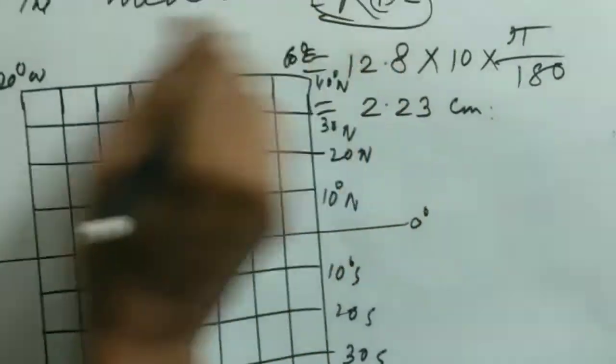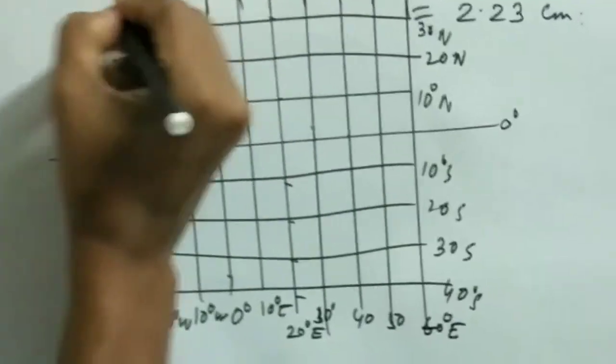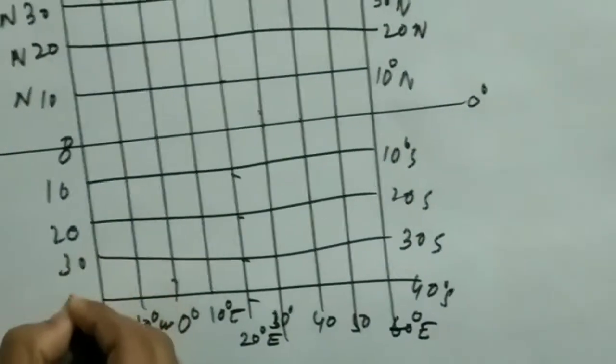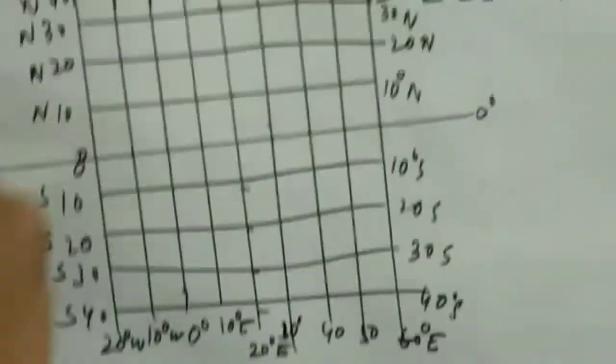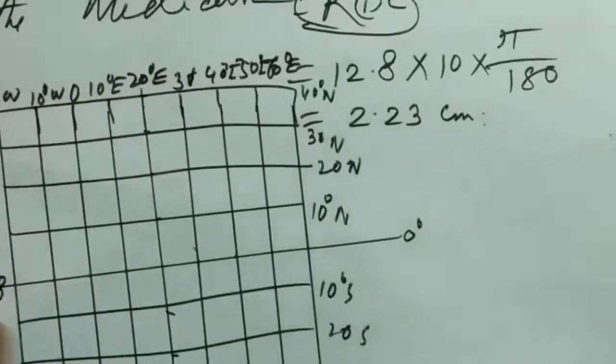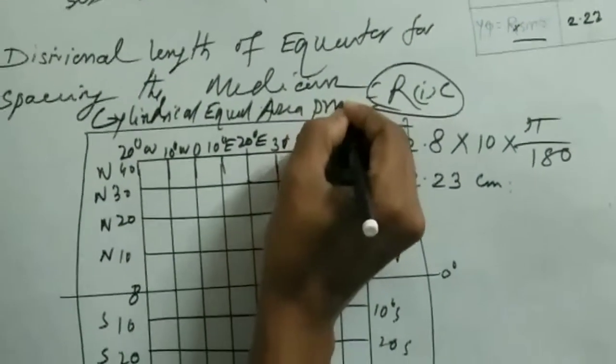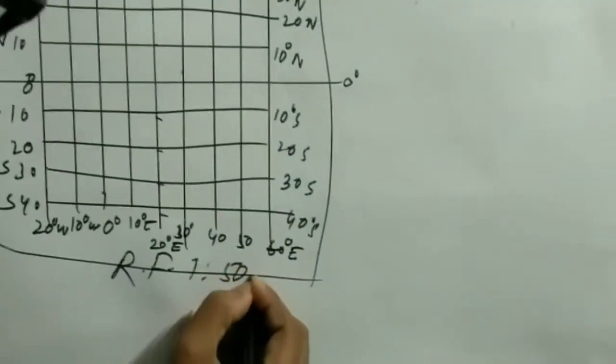Looking at the view: the equator is 0 degrees. Going north: 10, 20, 30, 40 degrees north. Going south: 10, 20, 30, 40 degrees south. Completing the projection: 30, 40, 50 degrees east and west. The border is 0. This is the cylindrical equal area projection. The RF is 1 to 50 million.